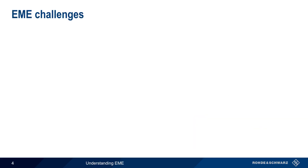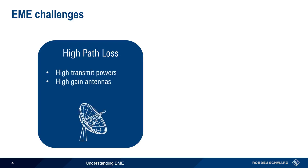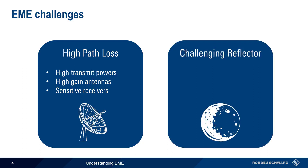There are, however, significant challenges in using EME, and these can be grouped into two categories. The first is the very high path loss, which in turn requires high transmit powers, high gain transmit and receive antennas, and sensitive low noise receivers. The second is that the moon itself is a challenging reflector — it is both a small target and a moving target, and it also has a very rough and irregular surface. Let's take a closer look at each of these challenges.